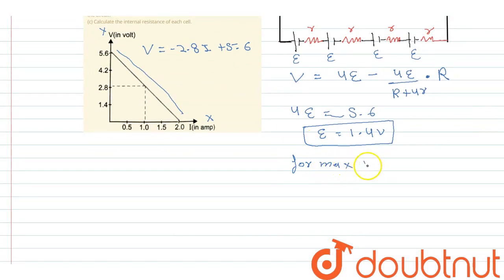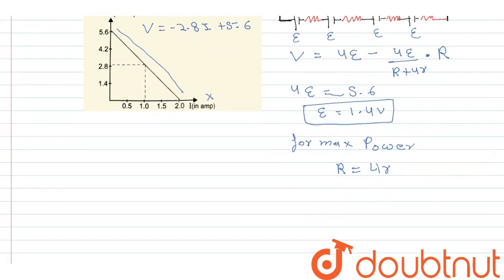capital R must equal 4r. When external resistance equals internal resistance, then power is maximum. So we have to find the value of R first, because R is a variable resistor.